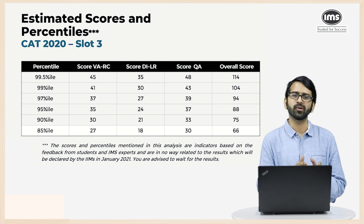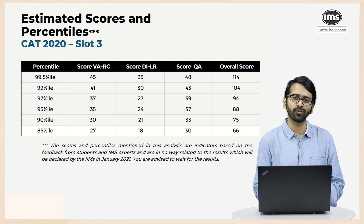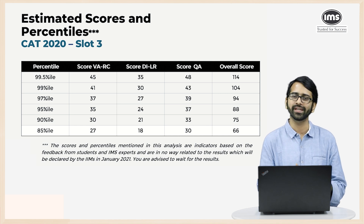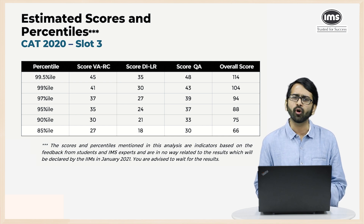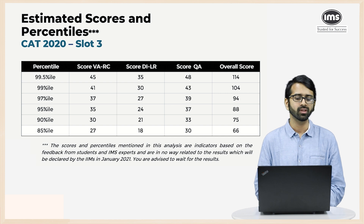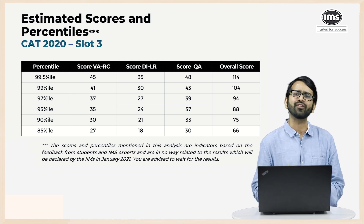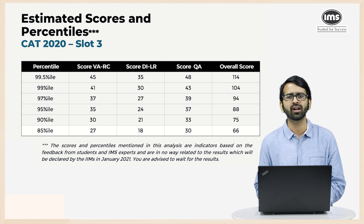For DILR, the score values for various percentile levels are almost in an arithmetic progression in multiples of three. Going bottom to top: 85 percentile should be around 18 marks, 90 percentile around 21, 95 percentile 24 marks — so if you've done two sets and answered all questions correctly you should be around the 95 percentile range. The 97 percentile is around 27 marks. A total of 10 correct questions — 30 marks — will get you 99 percentile, and 99.5 percentile should be around 35 marks.